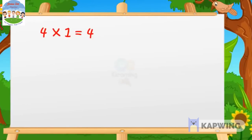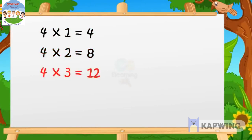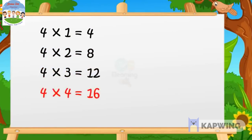4 ones are 4, 4 ones are 4. 4 twos are 8. 4 threes are 12, 4 threes are 12. 4 fours are 16, 4 fours are 16.